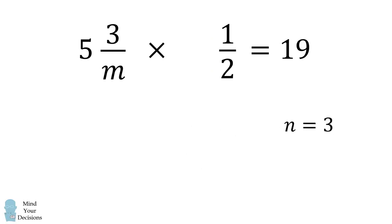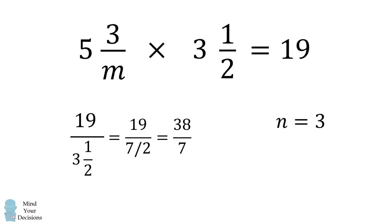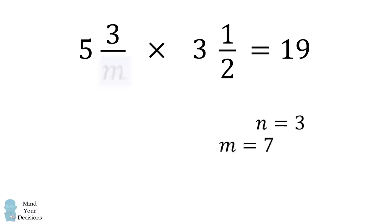From here, we can substitute in. We then take 19 divided by 3 and 1 half. This is equal to 19 divided by 7 halves, which is equal to 38 over 7, which is equal to 5 and 3 over 7. Thus, m is exactly equal to 7. And we've immediately solved the problem using inequalities. We get the solution that m is equal to 7 and n is equal to 3. Incredible!